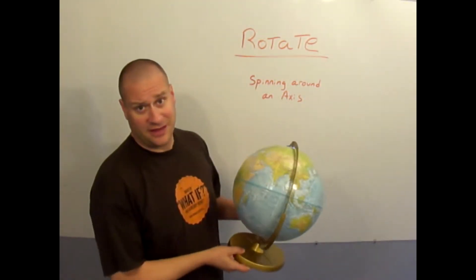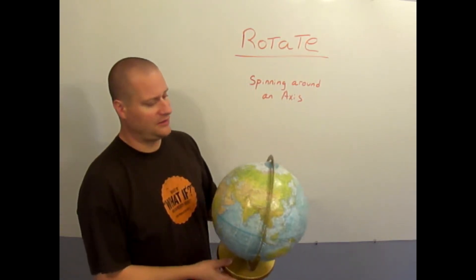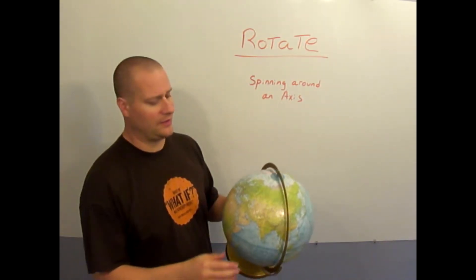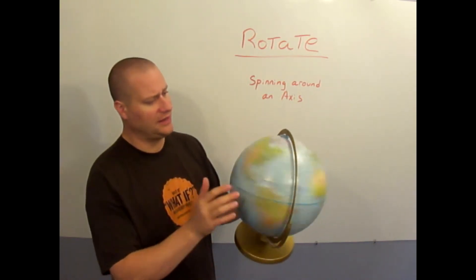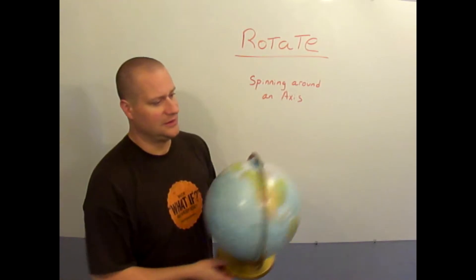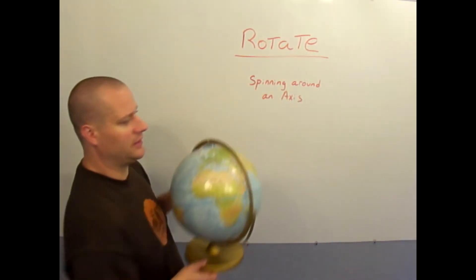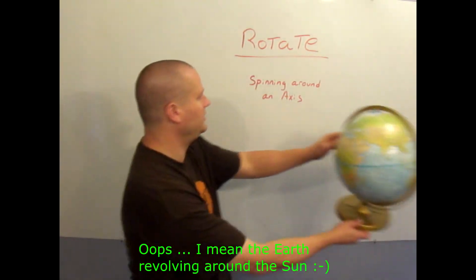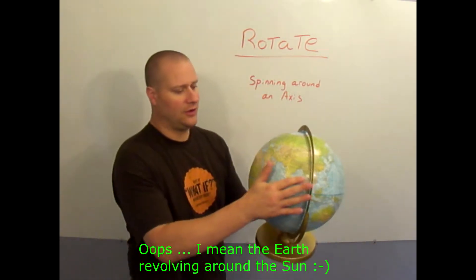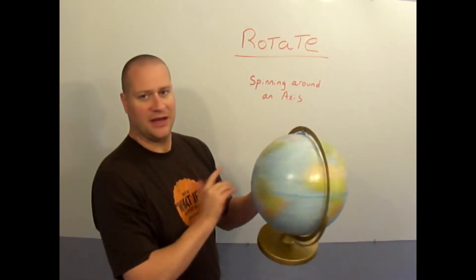Let's do our next definition, the word rotate. So the earth not only does it revolve around the sun, but it also rotates. To rotate is to spin on its axis. So if this is revolve, going around the earth in a big elliptical pattern like a satellite in orbit or revolving, the earth is also rotating or spinning.